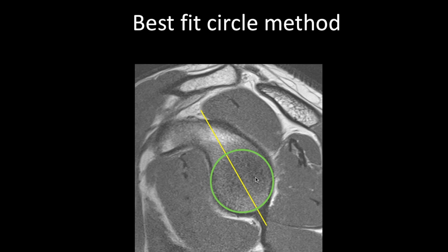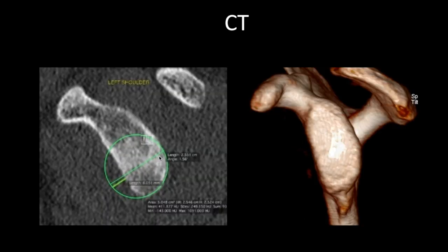Draw a longitudinal line along the axis of the glenoid, then draw a circle which best fits the posterior inferior and inferior margin of the glenoid. The anterior and posterior diameters of this circle should be the same size. If there is bone loss, we can calculate the percentage: the bone loss divided by the actual expected glenoid diameter, multiplied by 100, gives the percentage of bone loss. A 3D CT is considered the best method to measure bone loss, and since images of both shoulders are obtained, you can compare both sides.